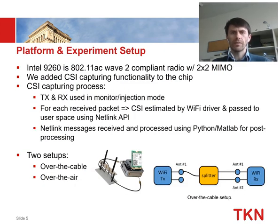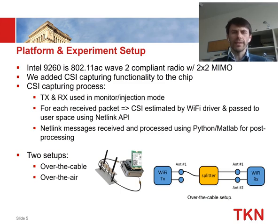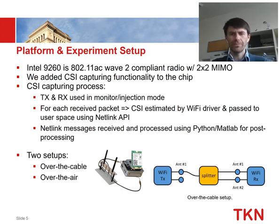Here you see the setup. We used Intel COTS Wi-Fi hardware — a 2x2 MIMO chip. The CSI extraction functionality was missing, so we added it to the chip. The setup was simple: we transmitted packets and on the receiver side estimated the channel state information as reported by the Wi-Fi driver, passed to user space via the Netlink API, with post-processing done in Python and MATLAB. We have two setups: one over the cable using a splitter connecting both receive antennas to a single transmit antenna, and one over-the-air setup for the actual use case.